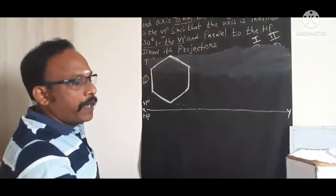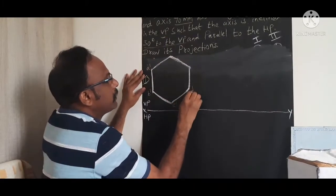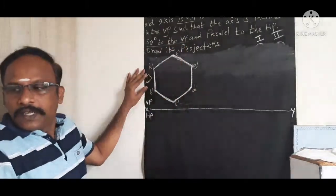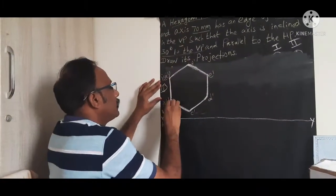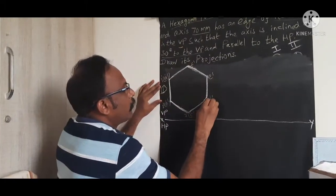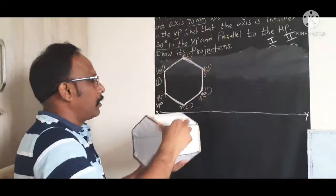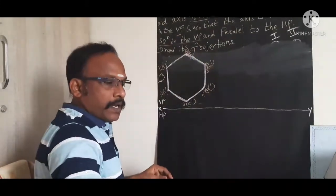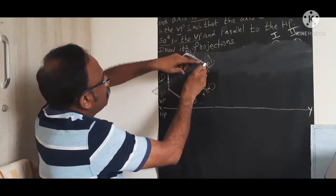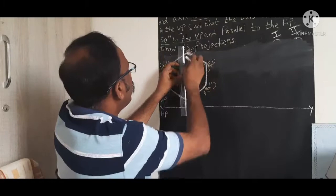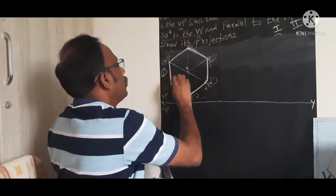Now mark the points. The back side points are marked as A dash, B dash, C dash, D dash, E dash, and F dash. The front side points are marked as 1 dash, 2 dash, 3 dash, 4 dash, 5 dash, and 6 dash. To mark the center, draw the diagonal lines — the meeting point gives us point 4. Now we move to step number 2.